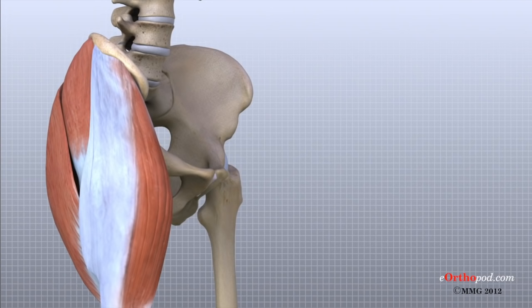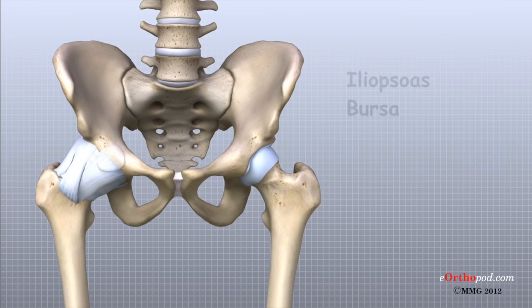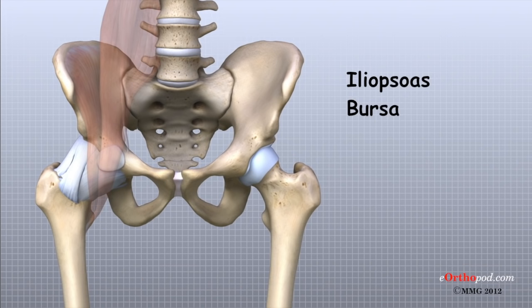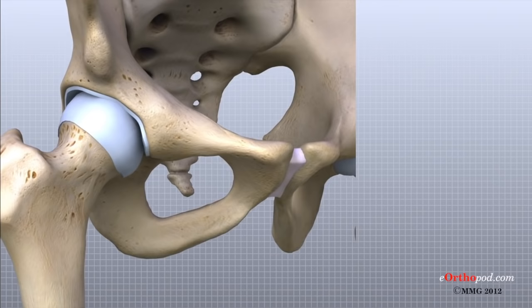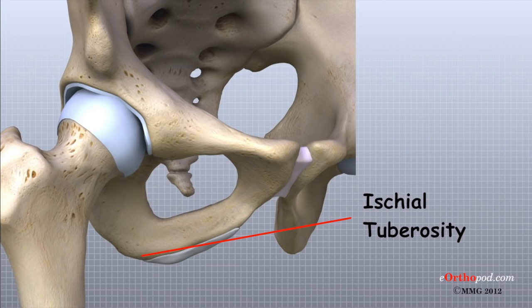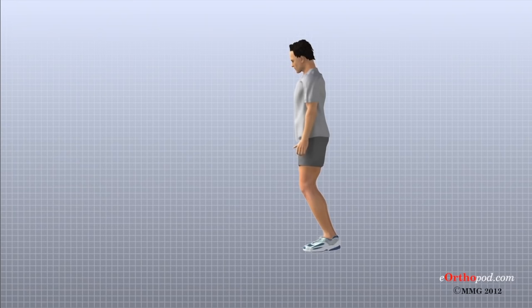Another bursa sits between the iliopsoas muscle and the hip joint where the iliopsoas tendon passes in front of the hip joint. When this bursa becomes inflamed, the condition is called iliopsoas bursitis. A third bursa covers the ischial tuberosity, the bump of bone in your buttocks that you sit on, and inflammation of this bursa is called ischial bursitis.